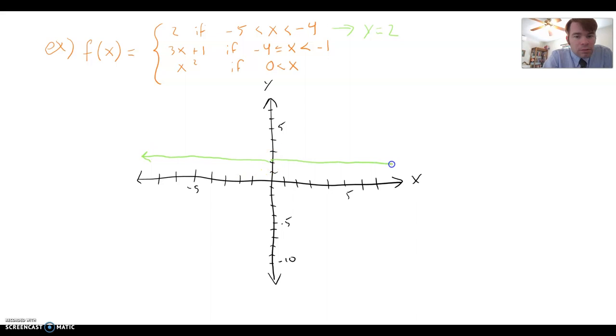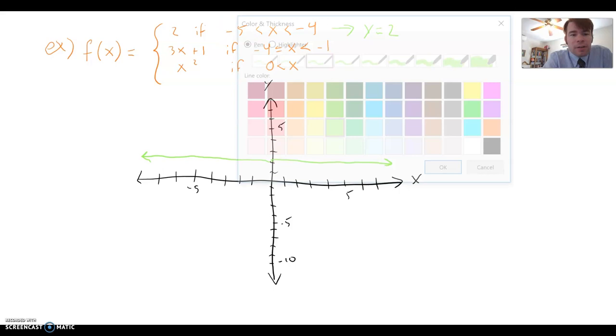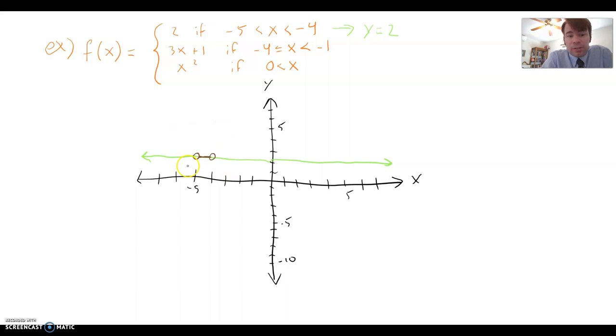But we don't want the whole line, we just want the part between negative 5 and negative 4. And the part between negative 5 and negative 4 is just right here. So that's all we're keeping from this line. The rest of the green line, you can go ahead and erase it. I'm going to leave it there just so we can see what we've been doing.